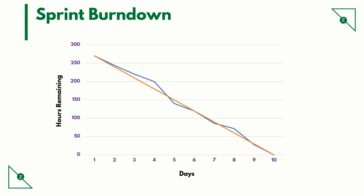And on day 5, you notice that the blue line has a steep curve running downwards past the orange line. This means that the team tried to catch up with the lagging time and they are now ahead of schedule. The blue line continues to be slightly zigzagged, and by the time the sprint ends, they have burned down the complete work.